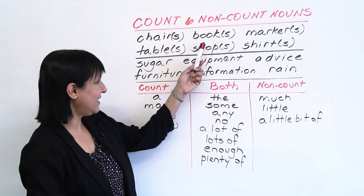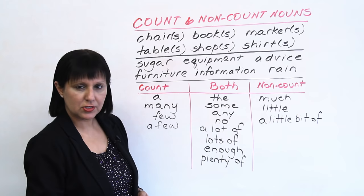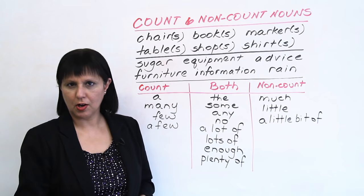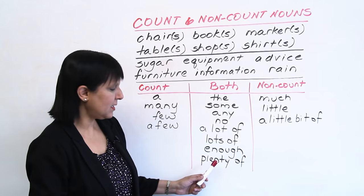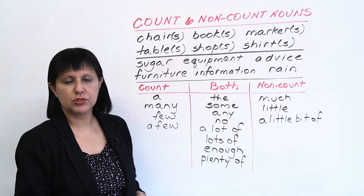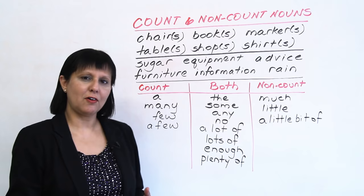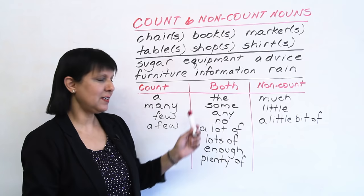'We have lots of chairs in the classroom.' 'We have lots of furniture in the shop.' 'Enough' can also be used. Or the last one, 'plenty of' — 'We have plenty of sugar, don't worry,' 'We have plenty of books in the library.' So if you're not sure which adjective or article to use with countable and non-countable nouns, use something from this column and you'll always be right.